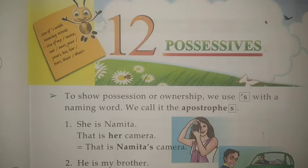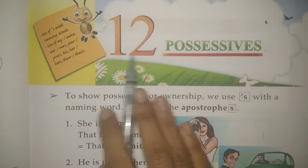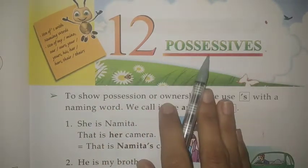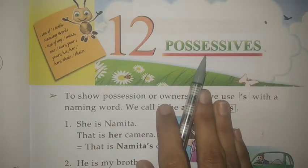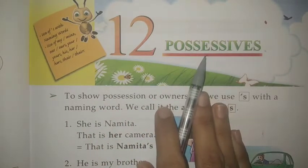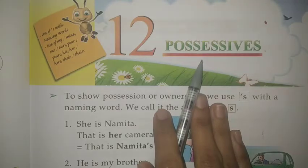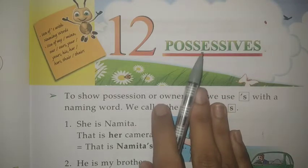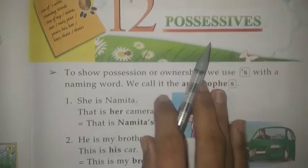My dear students, today's subject is English grammar and today we learn chapter number 12 — Possessive. Possessive yaani Maliki — wo chiz kis ki hai, wo batata hai. Let's start.